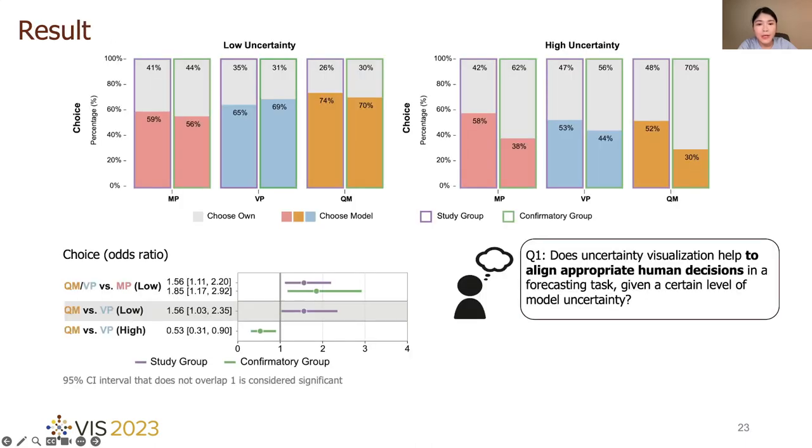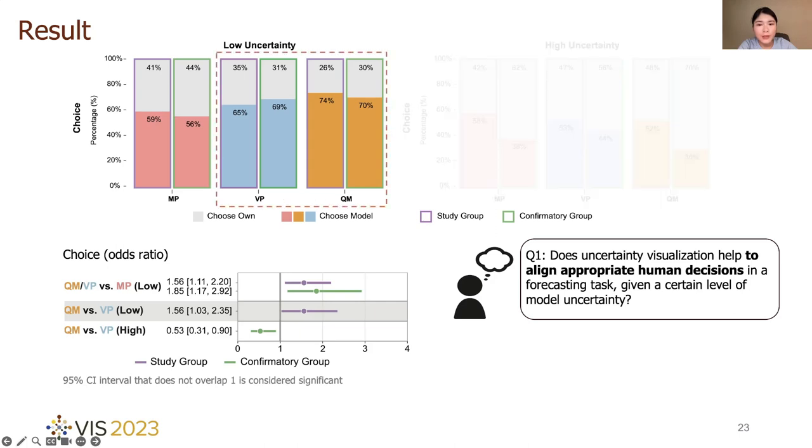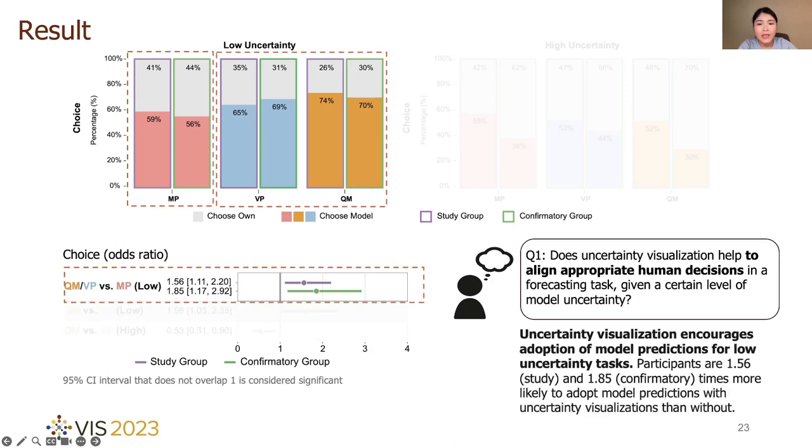By comparing human choice of model adoption under two uncertainty visualizations, question mark and violin plot, with model prediction only, we found that uncertainty visualization encourages adoption of model predictions for low uncertainty tasks.